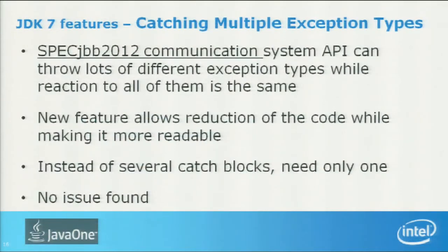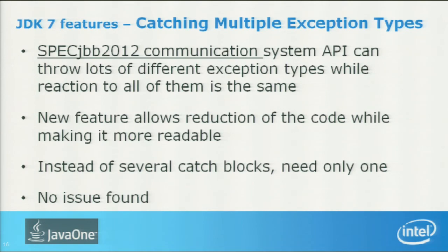Next is catching multiple exception types. We have two types of requests when communicating between Java processes: synchronous blocking requests that wait for a thread to get a response back, and asynchronous type communication across thousands of nodes. We use Grizzly there, which can throw different exceptions with the same answer. Catching multiple exception types worked very well for us — it made the code simpler with less code and cleaner structure, with no issues found.